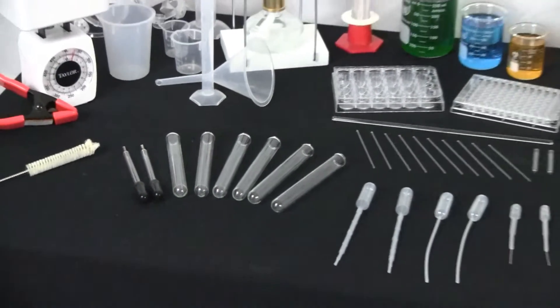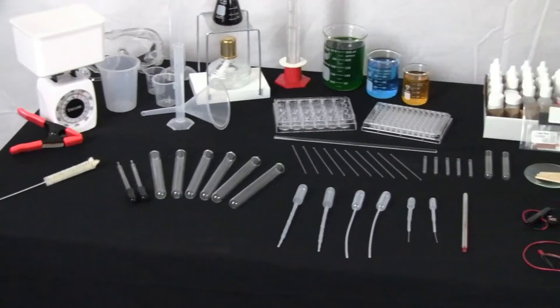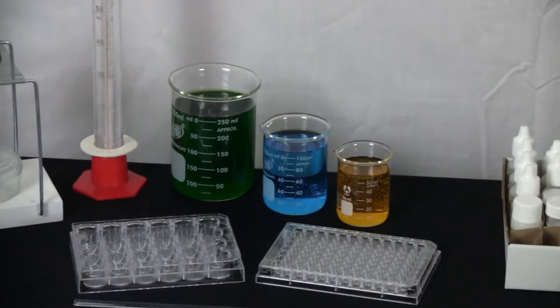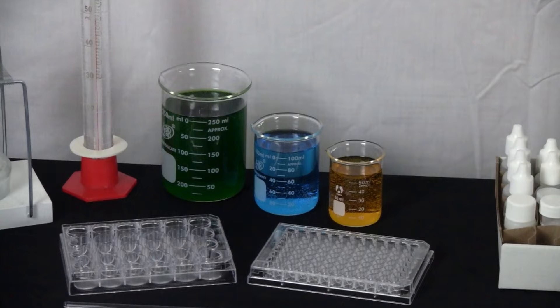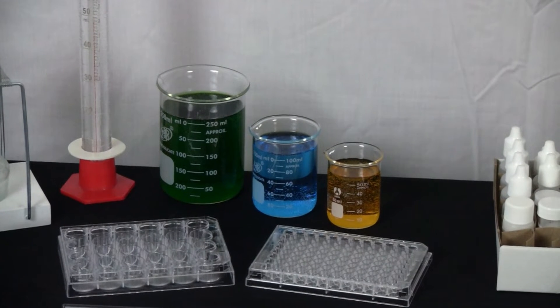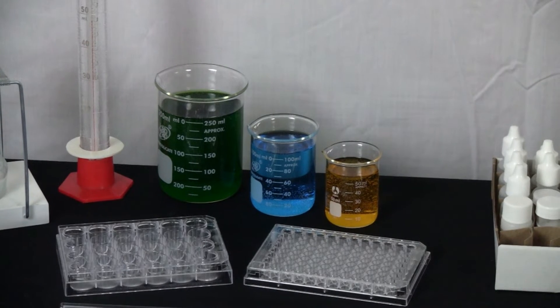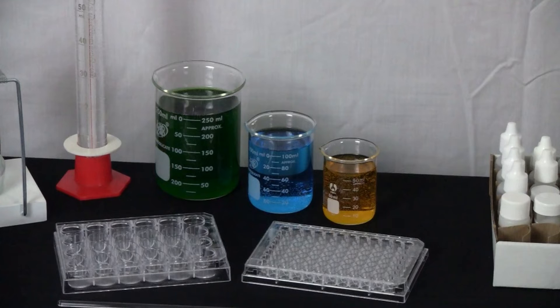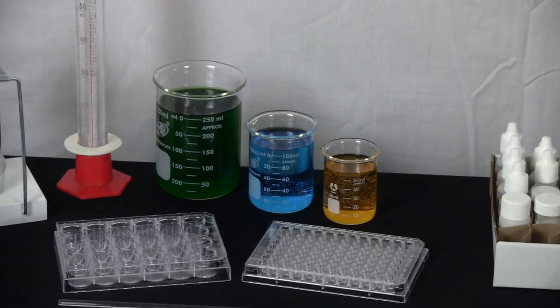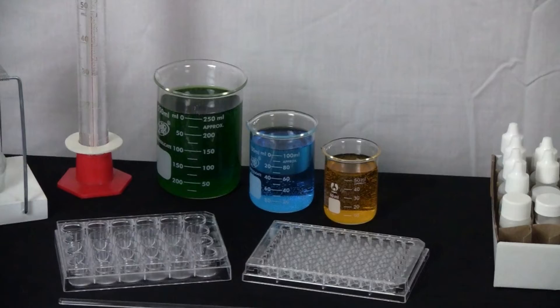The next thing we have is beakers over here. These beakers are measuring devices that are similar to drinking glasses. They can be heated also, and they allow you to be able to measure different liquids, and they also have a spout for pouring, if you can see the spout on each of those beakers.